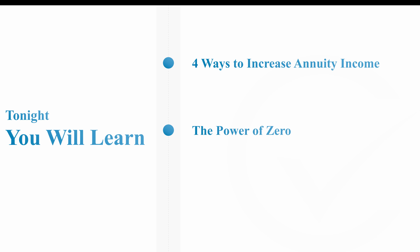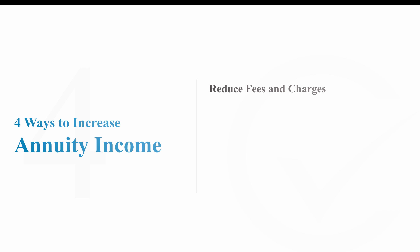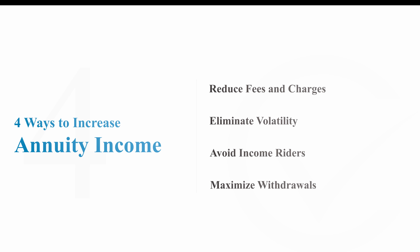Specifically tonight, you're going to learn four ways to increase annuity income. We're going to talk about something called the power of zero. And then lastly, after dinner, we're going to show you a way to increase your income up to 40%. This is going to be a lot of exciting material. If you have questions, at periodic points I'm going to stop and give you a chance to catch up. If you could make a note of your question until we get to those points, it'll help us stay on course so everybody can get dinner on time while it's hot.